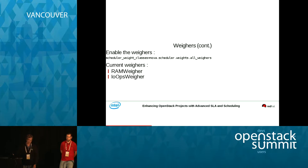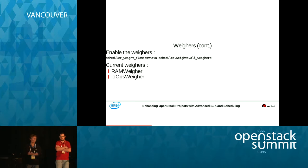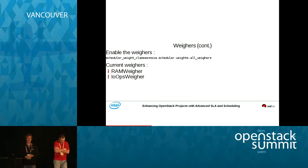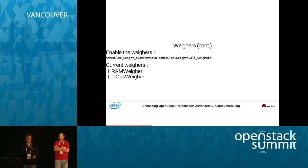You can talk about the different weighers available. One of the weighers we have right now is a RAM weigher — it says which particular host has the most free RAM available. Maybe you want a host that is utilizing its IO bandwidth as little as possible. You can come up with different forms of weighers to throw into this. The weighers are completely pluggable, just like the filters are pluggable. You can change them as you wish.